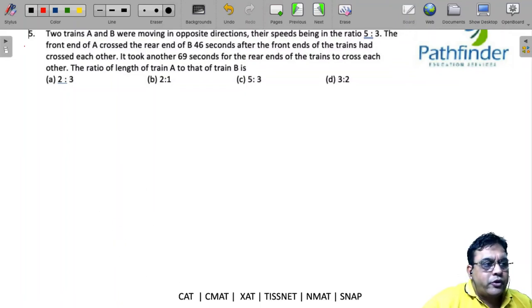CAT 2021 slot 2 question number 5, quantitative aptitude. Two trains A and B were moving in opposite directions, their speeds in the ratio 5 to 3. So S1 to S2 is given as 5 to 3.